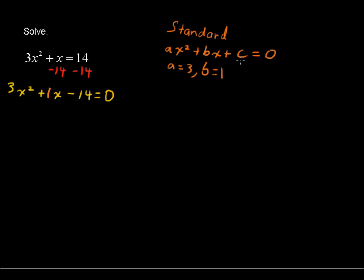Our c term number is negative 14. You can think of this as a plus negative 14. Okay, so c equals negative 14.